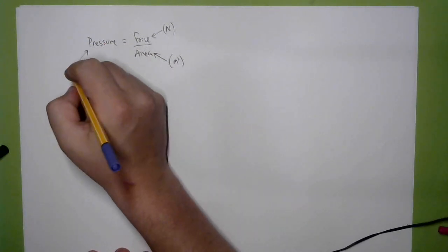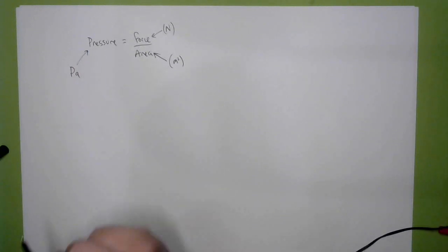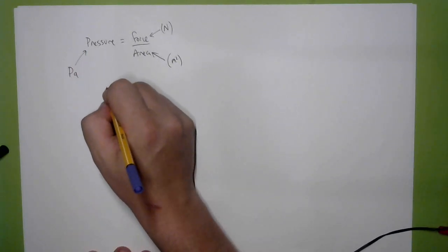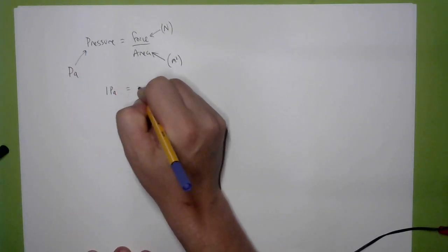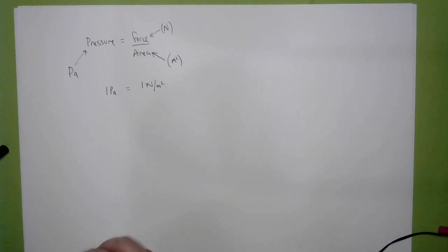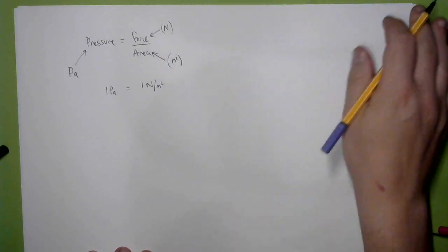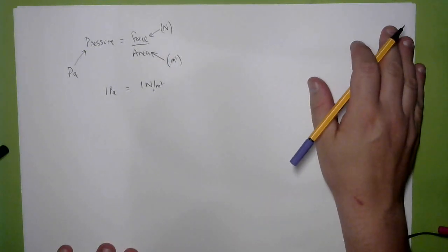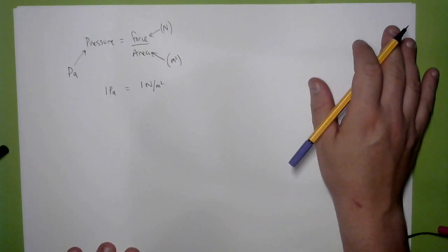And then pressure can have units of Pascals, so we could say that 1 Pascal is equal to 1 Newton per square metre. OK, so let's have a look at an example calculation.